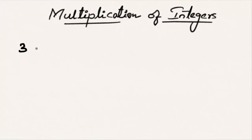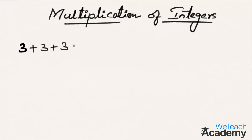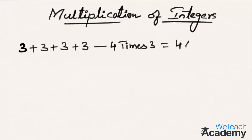Multiplication is nothing but repeated addition. For example, 3 plus 3 plus 3 plus 3 is nothing but adding 4 times 3. In multiplication we write this as 4 multiplied by 3. Now what is 4 multiplied by 3?